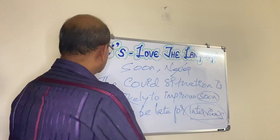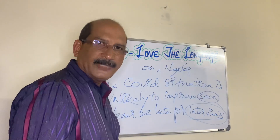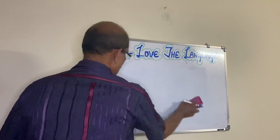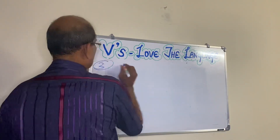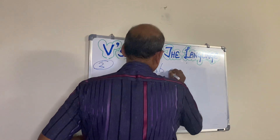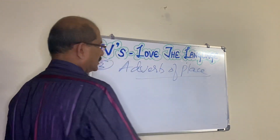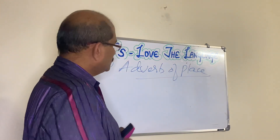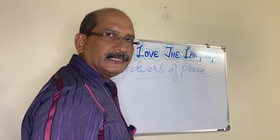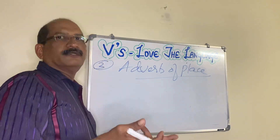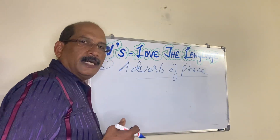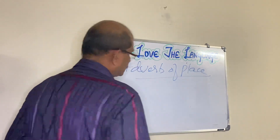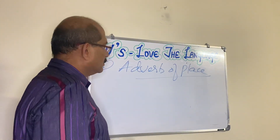Now we go to the third part of adverbs — that is adverb of place. This adverb of place illustrates the place of work or the happening. This particular word comes either after the main word, after the object, or at the end of the sentence. Let's take a look at some examples of adverb of place.